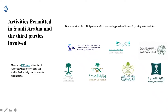Third-party approvals are usually required at the end of the setup process, after your company is registered, and are applied for through the Absher portal. Key third parties include: CITC for tech and telecommunications; the Ministry of Education for training and teaching activities; SAMA, the Saudi Central Bank, for anything finance-related; Ministry of Media; Ministry of Health for health tech; and the Ministry of Commerce, which is involved in most processes.